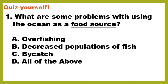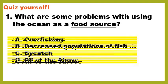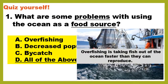Let's start off with a quiz: what are some problems with using the ocean as a food source? What are some problems fishing to get food from the ocean? A) overfishing — it's when you just fish too much; B) decreased population of fish; C) bycatch; or D) all of the above. The correct answer is all of the above. Overfishing is taking fish out of the ocean faster than they can reproduce.